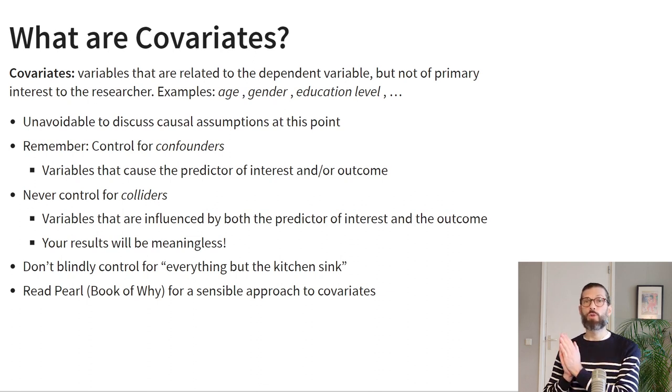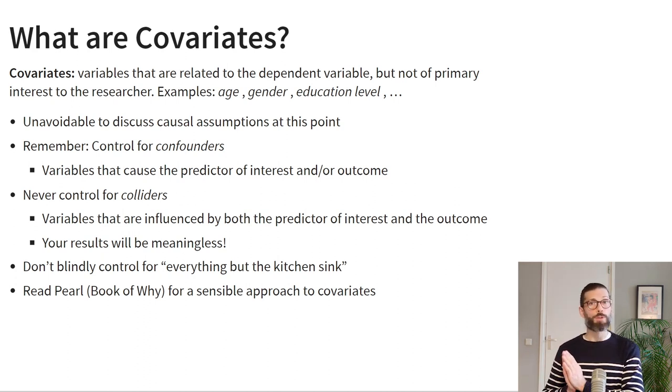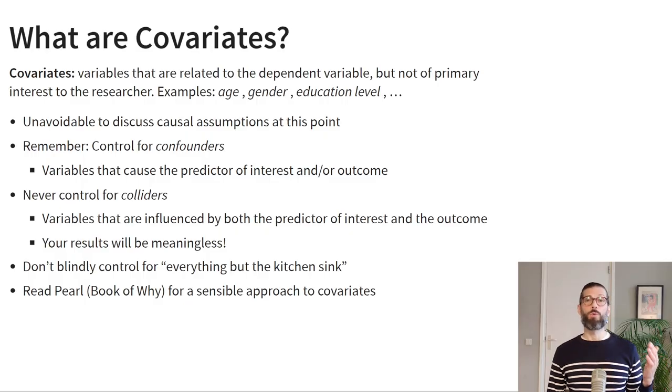We can control for confounders — those are predictors that are causes of either another predictor or the outcome of interest. But we should never control for colliders, which are variables caused both by one of the predictors and the outcome of interest. If you do control for a collider, the rest of your results will become uninterpretable. This is a strong argument for why you shouldn't control for everything. Instead, think carefully about which variables to include as controls — I recommend reading The Book of Why by Judea Pearl.